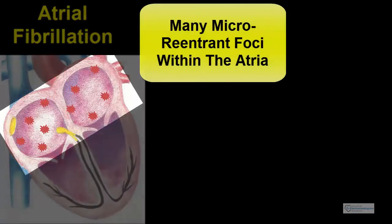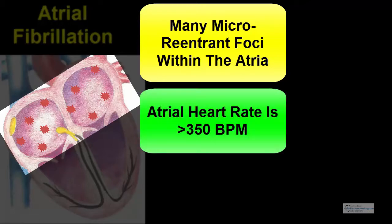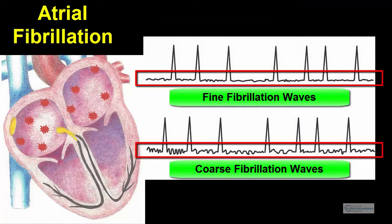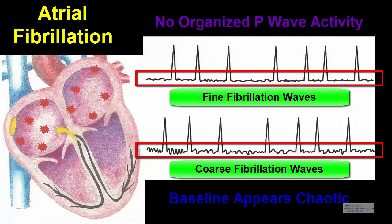With atrial fibrillation, there are many micro-reentrant foci within the atria that conduct at atrial rates greater than 350 beats per minute. The ECG shows typical fibrillatory waves which can be coarse or fine. When you look at the baseline, you don't see organized P-wave activity, but rather erratic activity — the baseline seems to look squiggly.